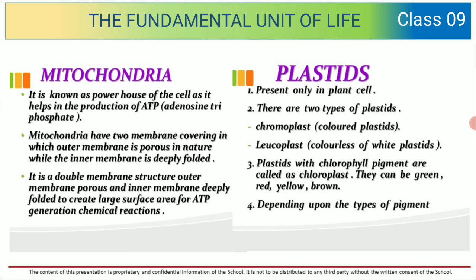Now let us talk about mitochondria. They are known as the powerhouse of the cell, as they help in the production of ATP — adenosine triphosphate. Mitochondria have two membrane coverings: the outer membrane is porous in nature, while the inner membrane is deeply folded, creating a large surface area for ATP generation.